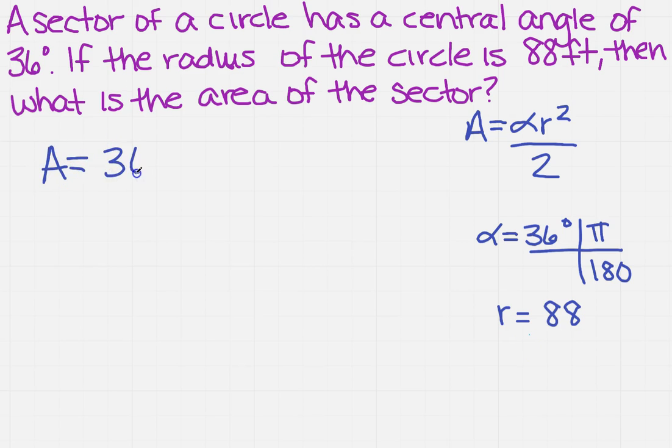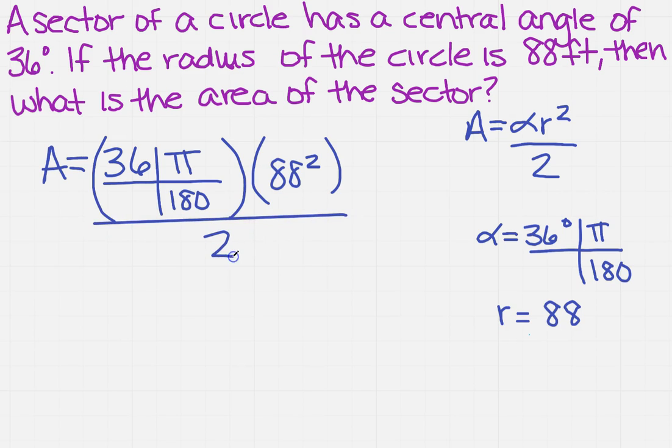and we said that alpha is 36 times pi over 180. I'm going to take that whole thing times R squared, so 88 squared, and then I'm going to divide by 2.